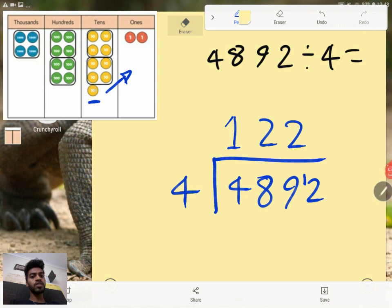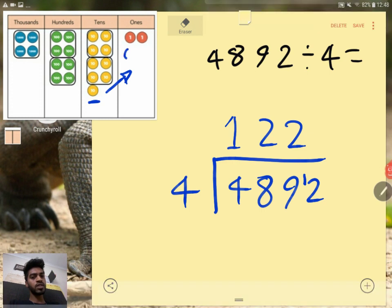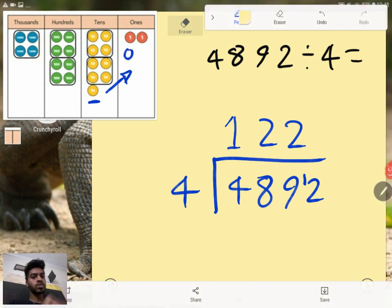Now when you go from the tens to the ones or whenever you go from the higher place value to the lower place value, it's not worth just one. It is in fact worth 10 of the lower place values.